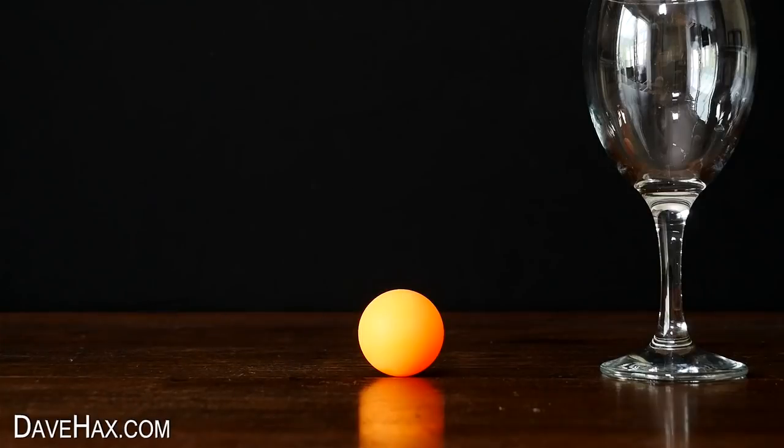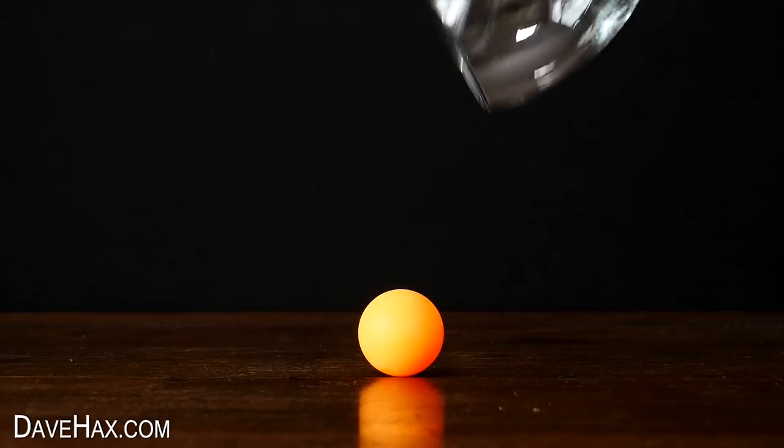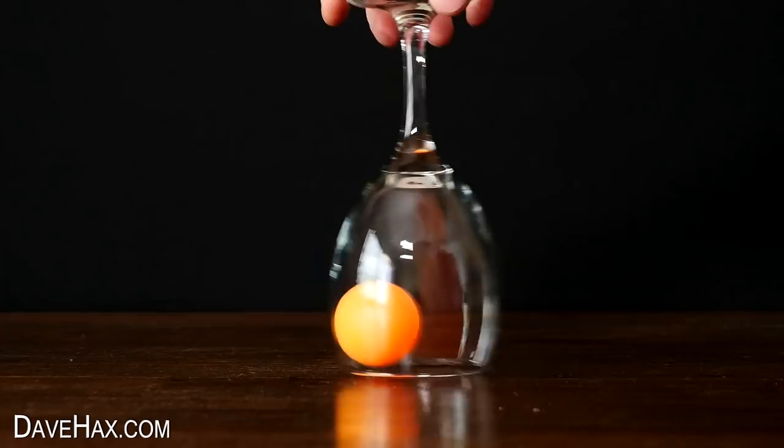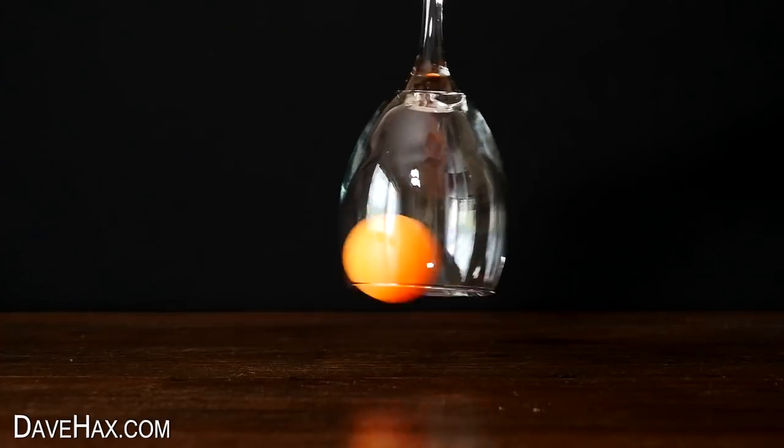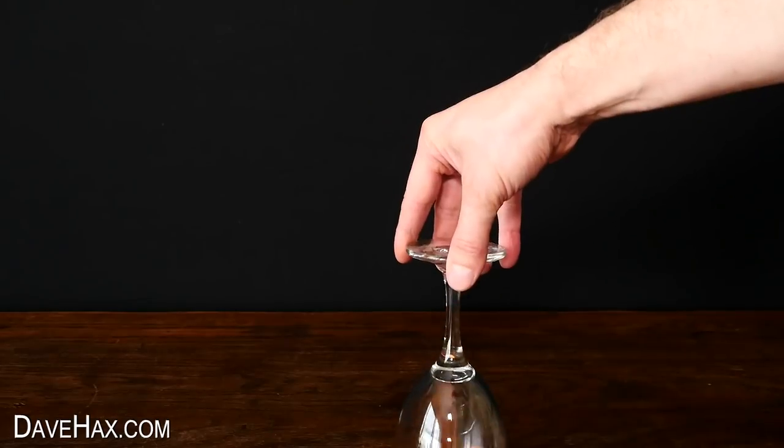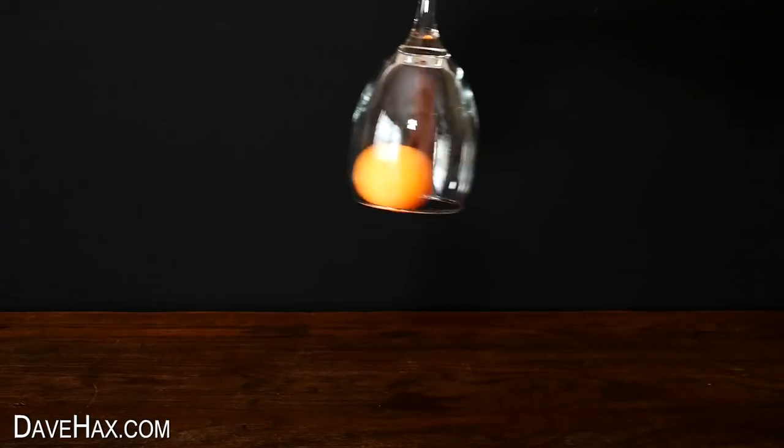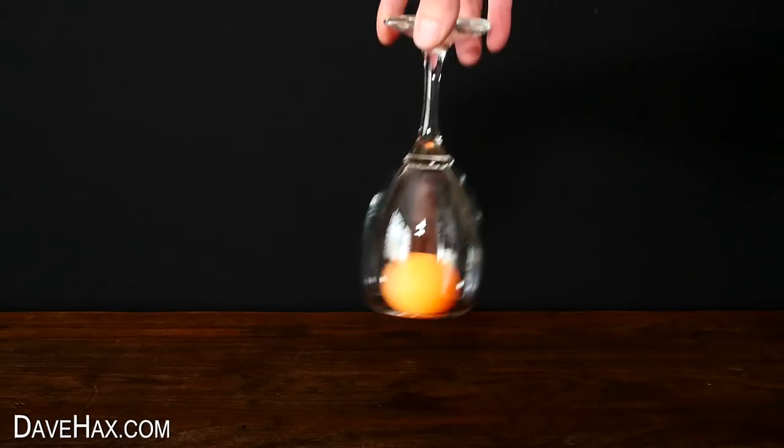But for the third way you need to think a little bit more creatively. Place the wine glass over the ball and start rotating the ball in the glass. Then you can slowly lift it off the table. You need to keep shaking the glass to rotate the ball, and you can lift it right the way up. And if you want to, back down.